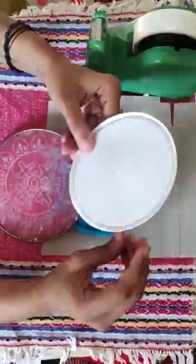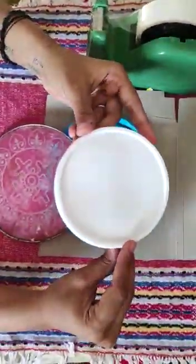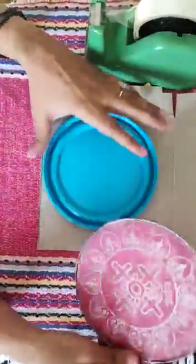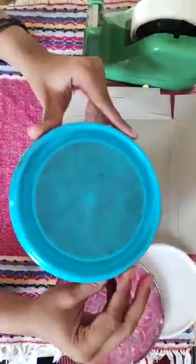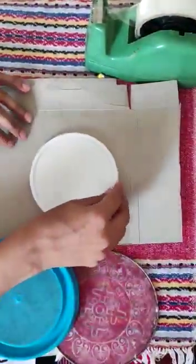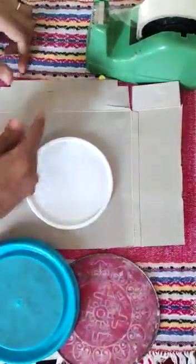For the base, you can use old lids of any container. This is a rangoli mixer. This is again a lid of an old container. And this is a cardboard. You can also use this. In this, you can just draw a circle and cut it out.